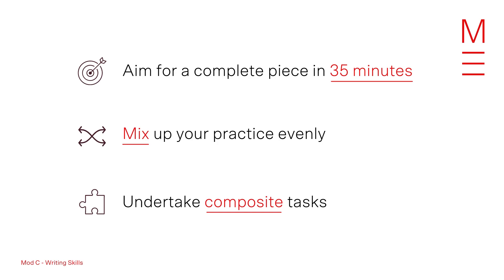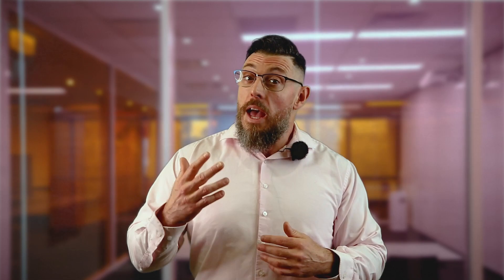Timed practice is going to be the biggest part of your preparation for mod C. Set aside time each week — at the very least once a fortnight — to write a mod C piece. Aim for writing a relatively complete piece in 35 minutes. Mix up your practice: don't just focus on discursive or creative questions, attack persuasive ones too. Also undertake composite tasks — for example, give yourself 20 minutes to write a discursive, persuasive or creative piece and 15 minutes to write a reflection. This way you're prepared for all eventualities. We've got 20 craft of writing practice questions on our blog — link below.